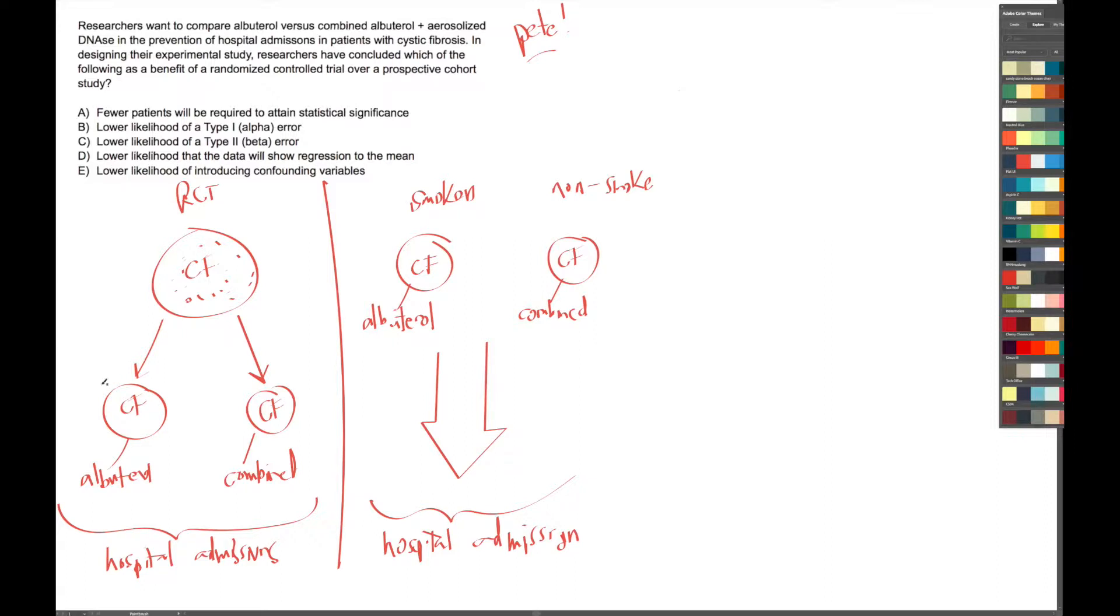So what we're saying here is, say we study this group, and after a year we see that the mean number of hospital admissions is 10. That's just the mean, right? And then when we look at the combined group, we see that the mean is like 1.2.